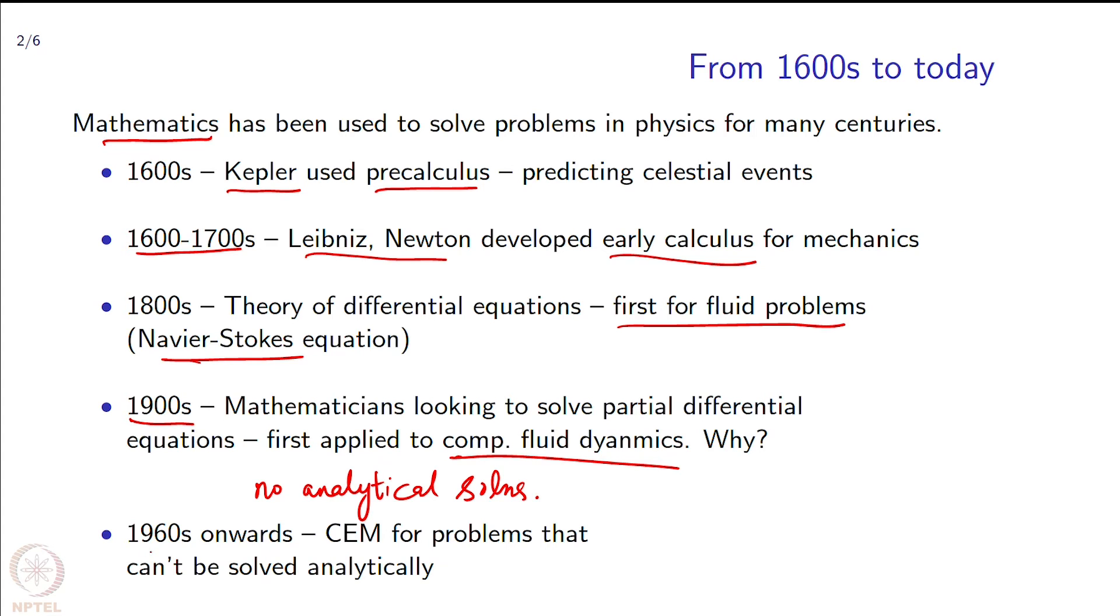Then around the 1960s is where the field of computational electromagnetics gets started because now people get ambitious. Computers are there. Now I want to calculate more complicated problems for which there is no analytical solution. The need to solve it numerically comes about. 1960s is also around the time when computers are becoming somewhat practical. It is getting that you can conceive that we can do this calculation. Still used to take lot of time with punch cards and things which to our minds in 2018 seems pretty historic, but this is 50 years ago. This is for problems that cannot be solved analytically.